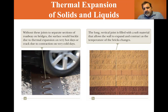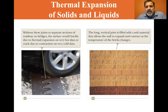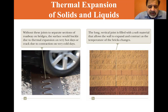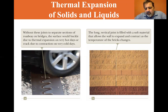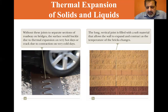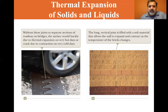Here's the side of a building — the long vertical joint is filled with a soft material that allows the wall to expand and contract as the temperature of the bricks changes. In the opening image where you saw the sidewalk buckle, those sidewalk panels were probably put in without any type of expansion joints, so when it got really hot beyond normal, they just buckled.